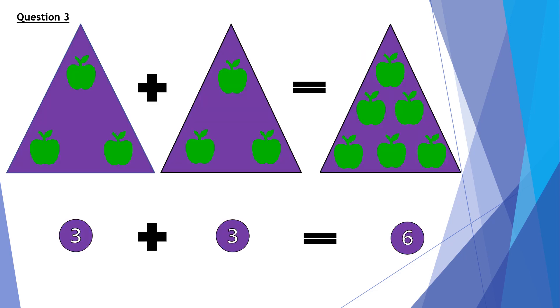Question 3. 3 apples plus 3 apples equals 6 apples. So in the number form, 3 plus 3 equals 6.